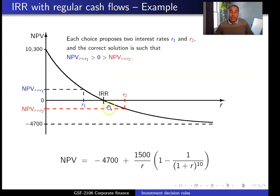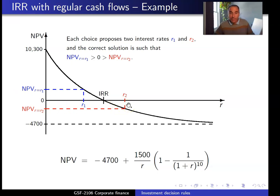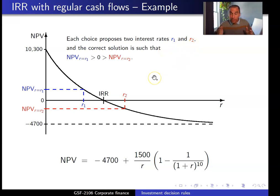To find the correct answer among the choices, we compute the NPV at the different discount rates presented and choose the answer that gives an NPV as close as possible to zero. Around the internal rate of return, if we take an interest rate smaller than the IRR, the NPV will be positive, and when we select a discount rate larger than the IRR, the NPV is negative. Each choice presents two interest rates R1 and R2, so the correct answer will have a positive NPV at the smaller rate and a negative NPV at the larger rate.